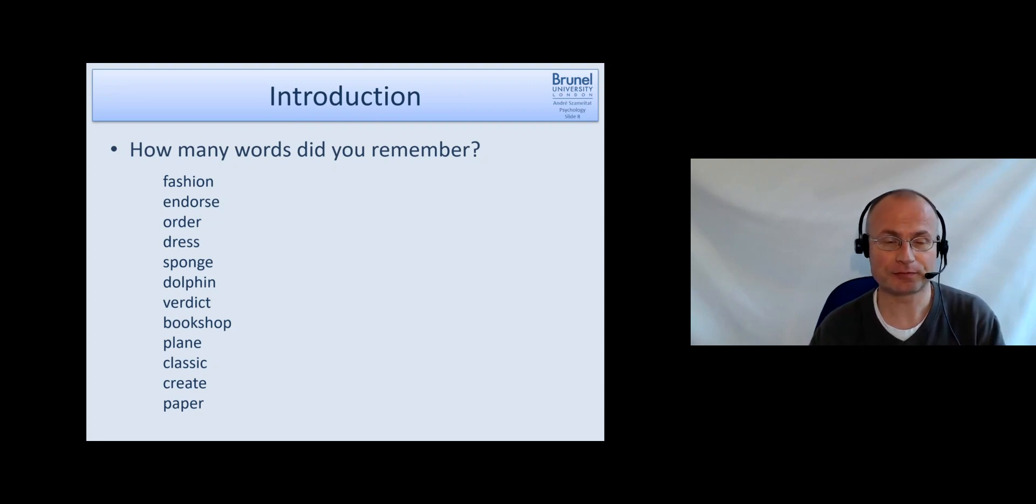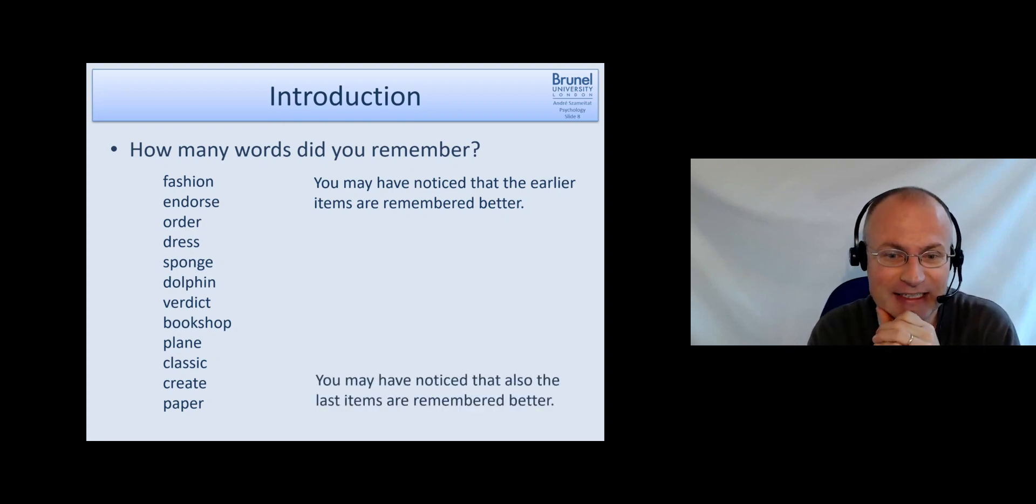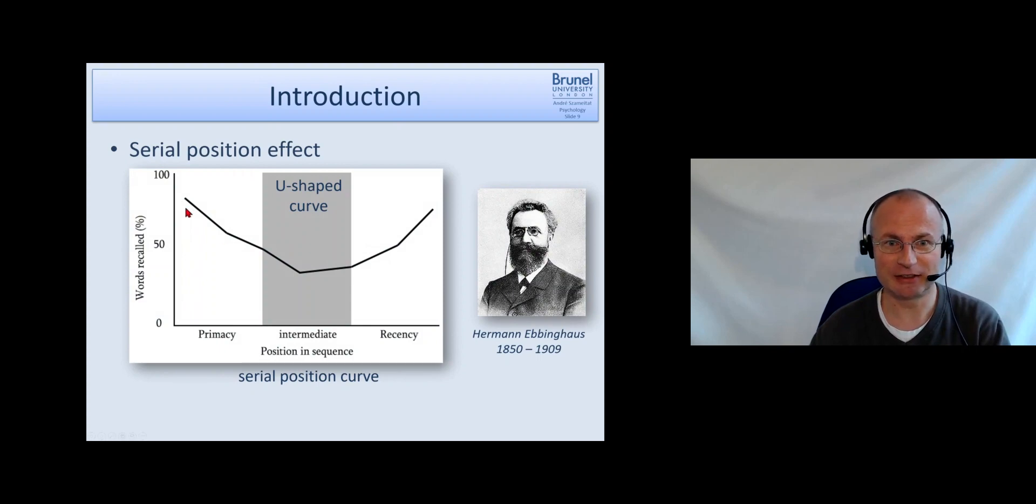Now, one thing to note is I used to do that as a poll in the lecture, which of course now doesn't work. If you do that and then people say how many people remembered fashion, how many people remembered indoors, and so forth, then we notice something. Often, on average, the earlier items are remembered better, and also the later items are remembered better, while those in the middle are more difficult to remember. This is called the serial position effect and results in such a u-shaped curve.